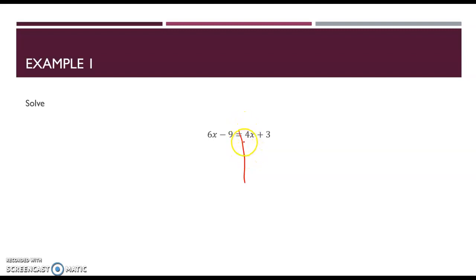So here I have the 4. It's positive, so the opposite would be to subtract 4x from both sides. I am trying to zero the x's out on one side and move them all to the opposite side. So here we have 6x minus 4x, which is 2x minus 9 equals these 4x's become 0. They zero out and we're left with a positive 3.